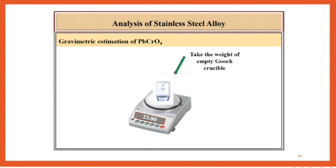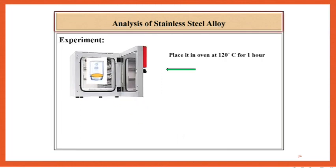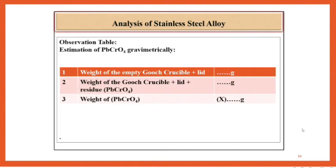Meanwhile, take the weight of the empty Gooch crucible. Filter the PbCrO4 precipitate through the previously weighed Gooch crucible and wash with 0.1% HNO3. Place in an oven at 120 degrees Celsius for 1 hour. Take the weight of Gooch crucible with precipitate and record as weight of empty Gooch crucible plus lid, weight with residue, and weight of residue.